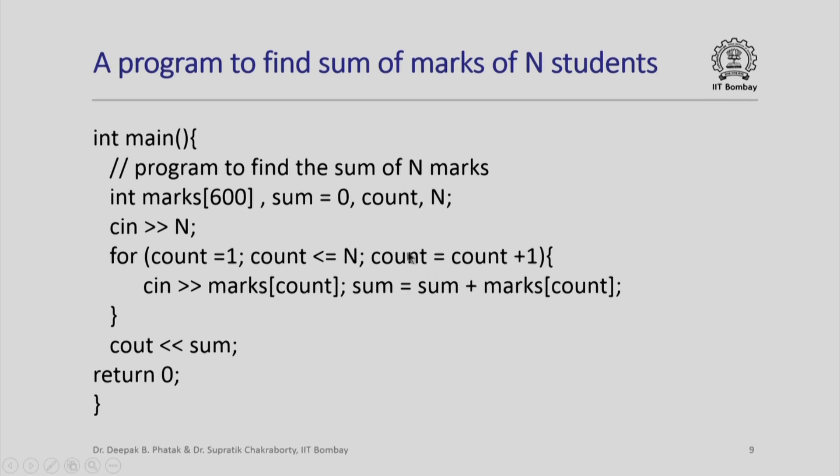So this iteration will be executed n times like we saw last time, and all that we do is we read the count-th element of marks and then add it to sum. We expect that at the end we shall have found the correct sum, but wait, there is one problem.